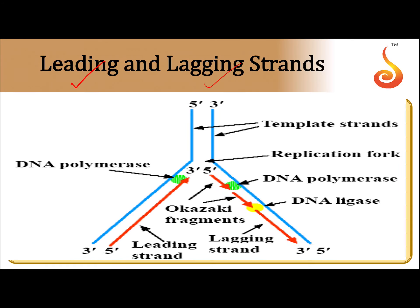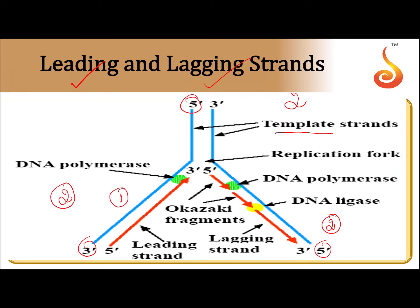Leading and lagging strands. Each DNA has two strands. During DNA replication, both parental strands act as templates. Out of two parental strands, the first parental strand polarity is 3-prime to 5-prime, and the second parental strand polarity is 5-prime to 3-prime.